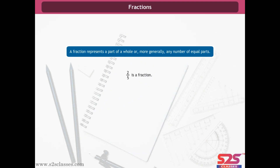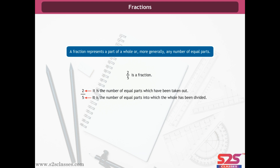2 divided by 5 is a fraction. In 2 divided by 5, 2 is the number of equal parts which have been taken out, and 5 is the number of equal parts into which the whole has been divided. Or simply, we can say 2 is the numerator and 5 is the denominator.